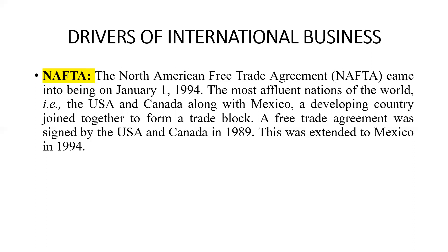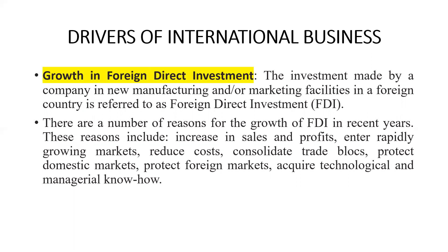You should see the news related to NAFTA. Donald Trump is against NAFTA and proposed a new agreement — USMCA, the United States-Mexico-Canada Agreement. NAFTA is one of the examples of regional integration and an important driver of international business. Another important driver is foreign direct investment — the growth in FDI is also one of the important factors which has led to international business. FDI is the investment made by a company in new manufacturing or marketing facilities in a foreign country. The reasons for FDI include increase in sales and profit, entering rapidly growing markets, reduced cost, consolidated trade blocs, protecting domestic and foreign markets, and acquiring technology and managerial know-how.